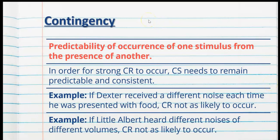Contingency refers to the predictability of occurrence of one stimulus from the presence of another. For a strong conditioned response to occur, the conditioned stimulus needs to remain predictable and consistent. If Dexter received a different noise each time he was presented with food, the conditioned response is not as likely or as strong. If Little Albert heard different noises of different volumes during conditioning, the conditioned response would not occur as strongly. Think of contingency as consistency — keeping the CS, CR, and US the same makes classical conditioning more likely to be successful.